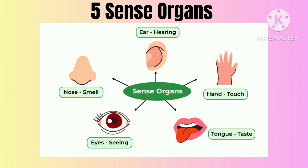We have five sense organs. What are they? Ear for hearing. Hand for touching. Tongue for taste. Eyes for seeing. Nose for smell.